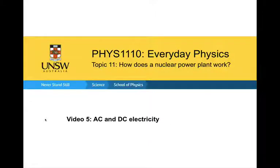This is video 5 in the topic: how does a nuclear power plant work? In this video, we're going to be looking at AC and DC electricity, and how we get the electricity from the nuclear power plant — or in Australia we don't use nuclear power plants — so from whichever power plant it is, to our homes.